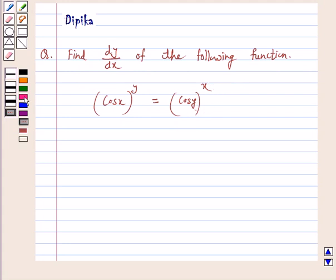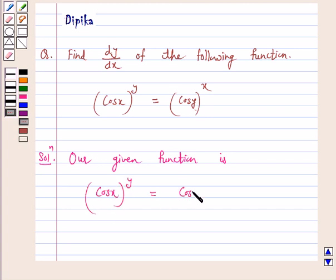Let's start the solution. Our given function is (cos x)^y = (cos y)^x.